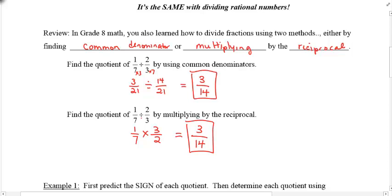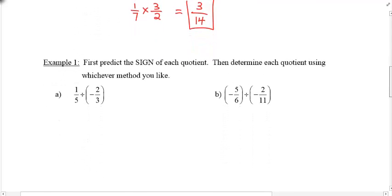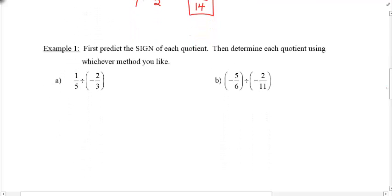Don't know which method you like? It doesn't matter to me. Just make sure you know how to divide. So example number 1 below, I'm going to ask you once again, predict the sign of the quotient, and then determine the quotient using whichever method you like. I'll show you for the first one both methods, but the rest I'll just probably do multiply by the reciprocal. I'm assuming most teachers like to let you use those.